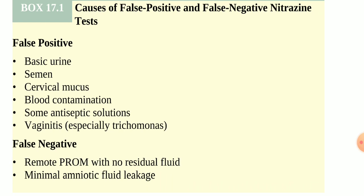There are two results: false positive and false negative. A false positive occurs when there is no rupture of membrane but the pH appears alkaline. Causes include basic urine, semen, cervical mucus, blood contamination, antiseptic solutions, or vaginal infections such as trichomoniasis. A false negative occurs when there is a rupture of the amniotic membrane but minimal or no residual amniotic fluid leakage.